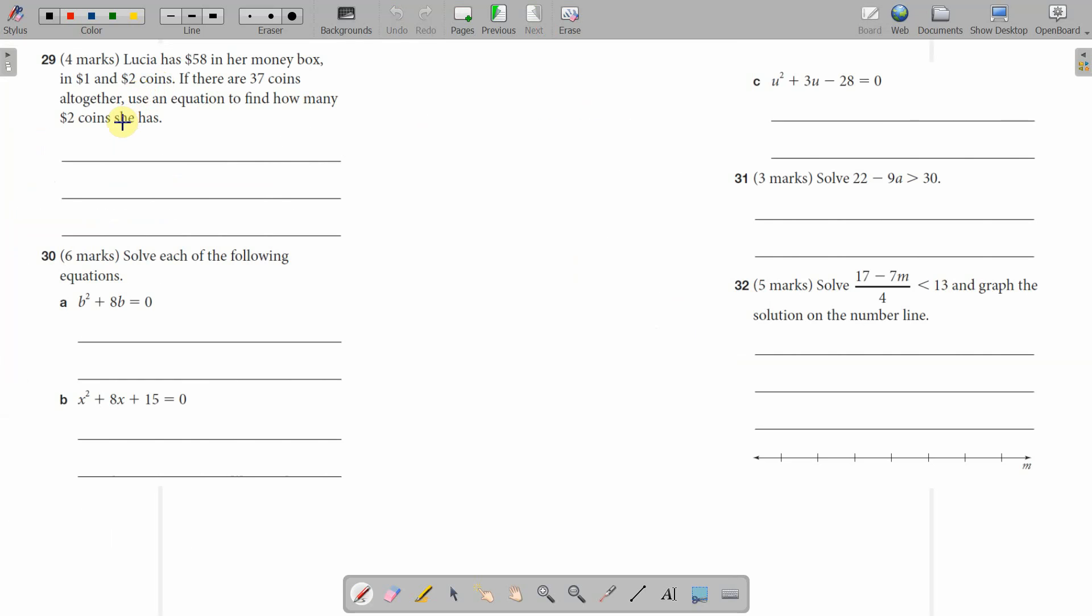Lucia has 58 dollars in a money box in one dollar and two dollar coins. If there are 37 coins, use an equation to find how many two dollars she has. I'm going to come back to that one, question 29. That's going to take something. I'll think it through while we're doing the next problems.